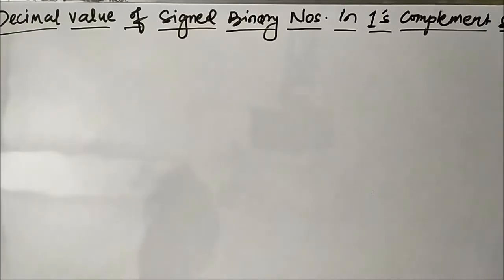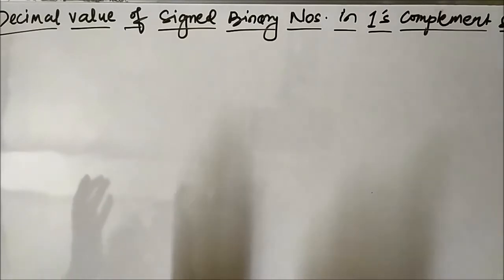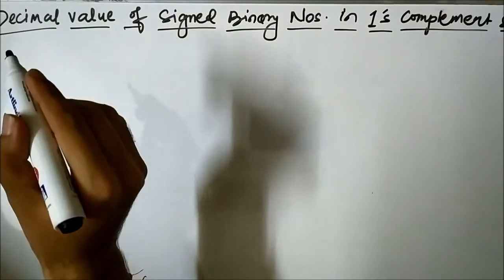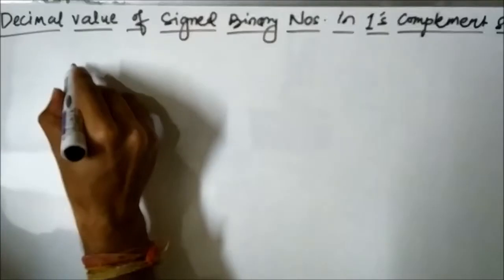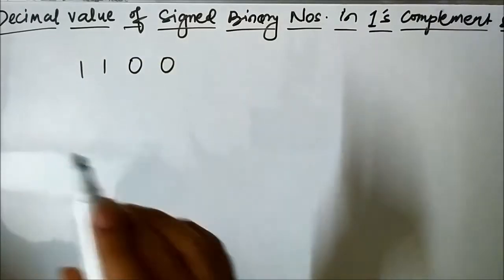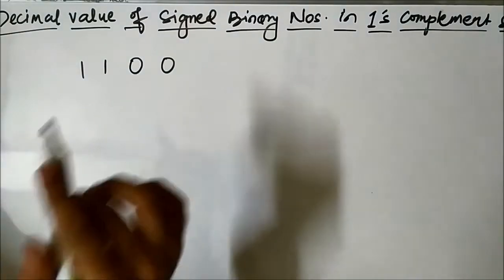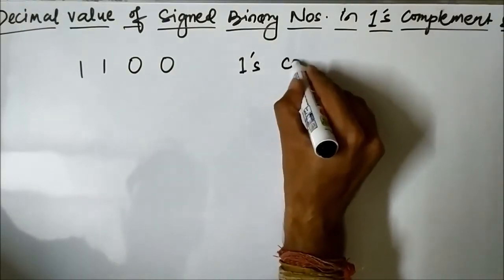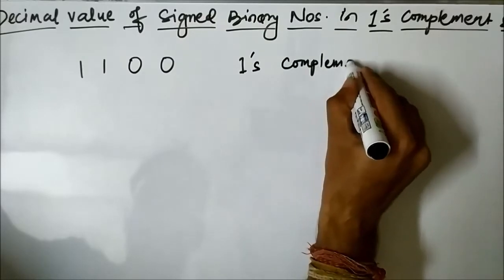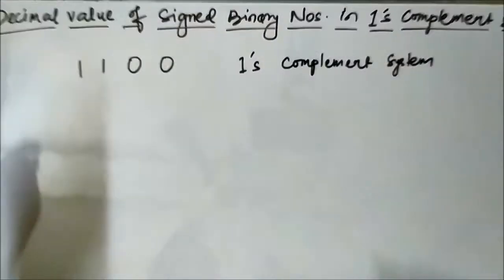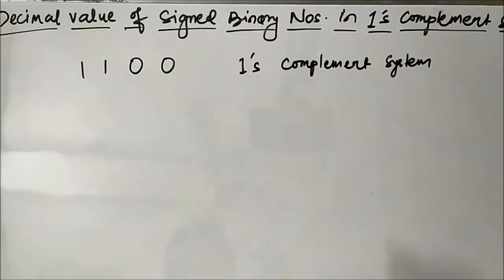Let us try to understand it directly by taking up a question. Suppose we have been given a signed binary number, let us say 1100, and it has been mentioned that this signed binary number is represented in 1s complement system. We have already discussed how to represent signed binary numbers using 1s, 2s, and the sign magnitude system, so please check out that video.